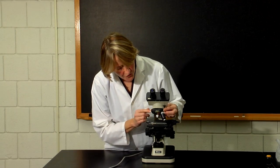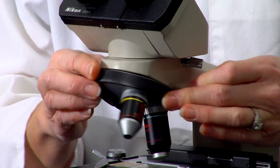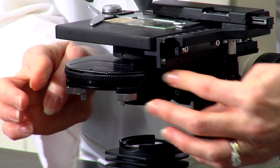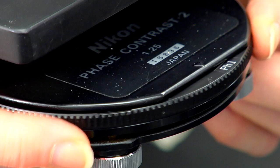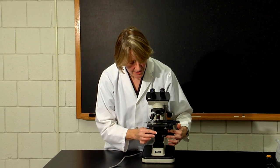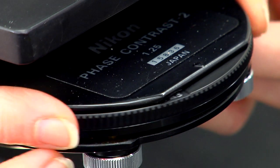So if you'll notice, for the 10x lens, you need to use the pH 1 or phase 1. So we would adjust the ring to pH 1. But notice that it also has other phases. You have phase 2, 3, and 4 as well.